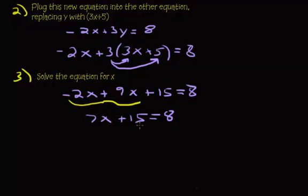I'm going to subtract the 15 over to the other side. So I'll get 7x equals negative 7. Then finally solving for x, we get x equals negative 1. So step three is where we solve for one of the variables.